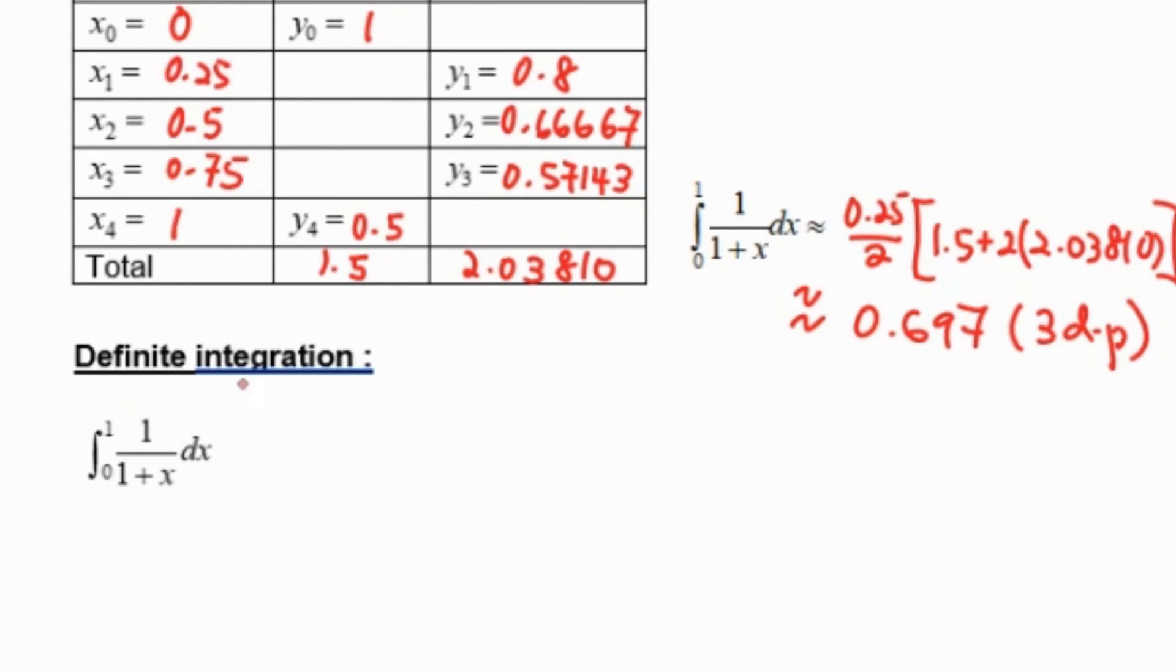Then by using definite integration, we will find this integral. Integrate 1 over 1 plus x, it will equal to ln(1 plus x). Substitute the upper limit which is ln(1 plus 1) minus substitute the lower limit 1 plus 0. Press the calculator, ln(2) minus ln(1) equals 0.693 for 3 decimal places.